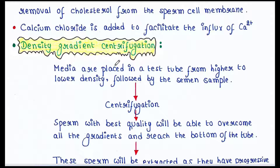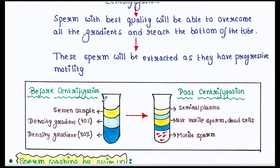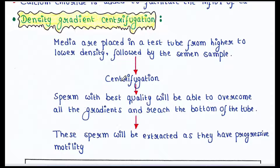Now let's look at density gradient centrifugation. Media are placed in a test tube from higher to lower density, followed by the semen sample on top. So we have the semen sample, then 40% media, then 80% media, forming the gradient. The second stage is centrifugation.